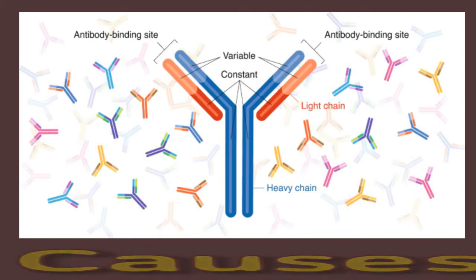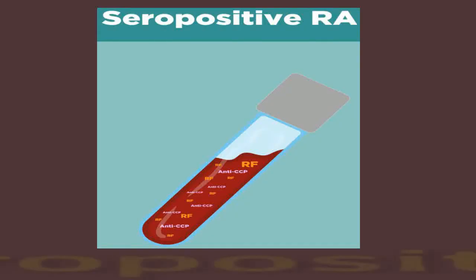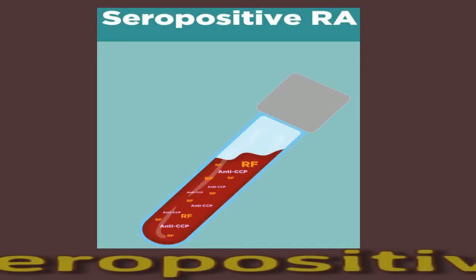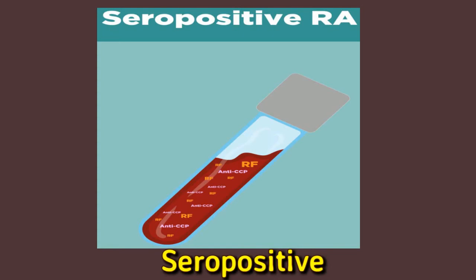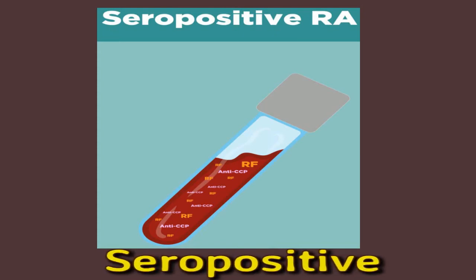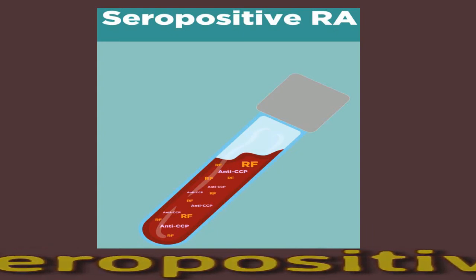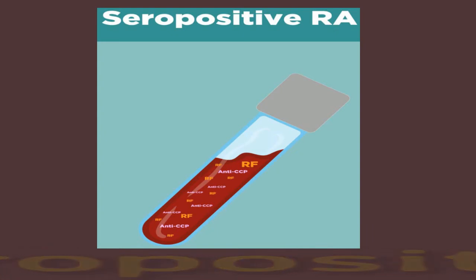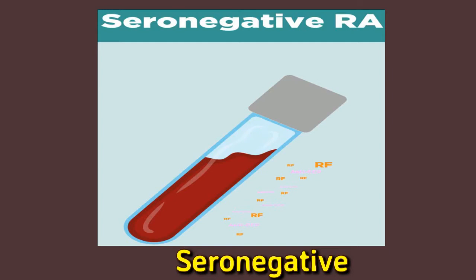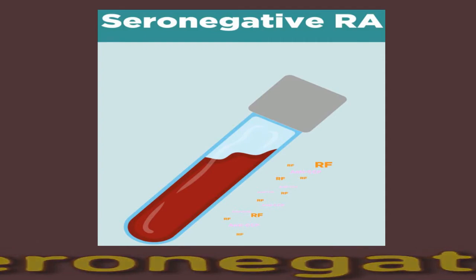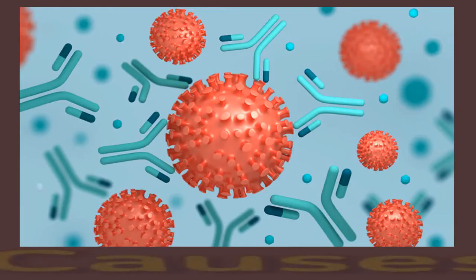Polyarthritis can be either seropositive or seronegative. Seropositive means the person has antibodies in their blood that may attack their body instead of infections such as bacteria or viruses, so they may be more likely to develop polyarthritis. Seronegative indicates that those particular antibodies are not present in someone's blood.